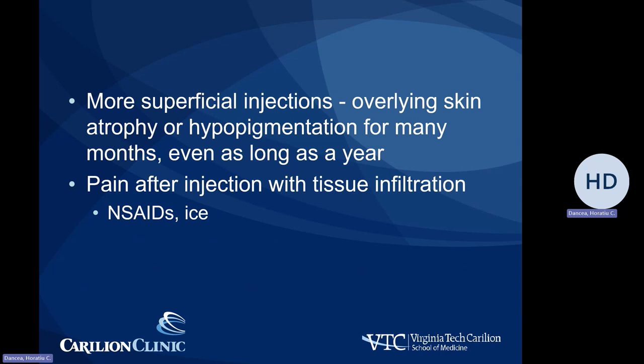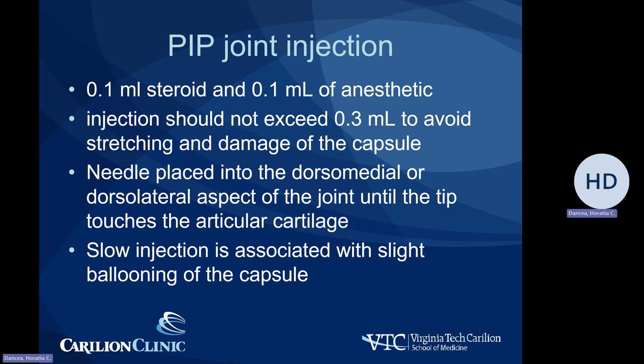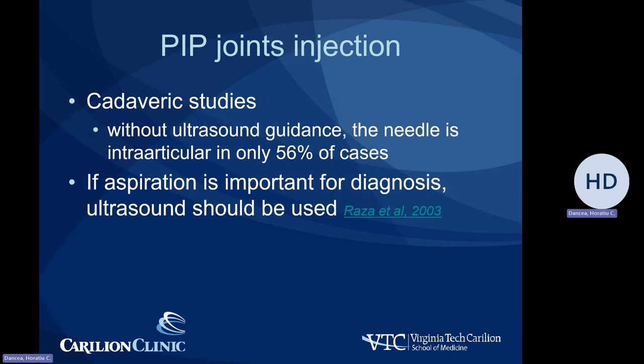More superficial injections may also cause skin atrophy or hypopigmentation that may last four months up to a year or two. Pain after injection should be treated with NSAIDs and local ice. For DIP joints, we essentially never or very rarely inject; when we do, we should use a very small amount of fluid as it is a very small joint. For the PIP joint, we should not exceed 0.3 to 0.4 mls of fluid to avoid stretching and damage of the joint capsule. Without ultrasound guidance, the needle is intra-articular in only 56% of cases.